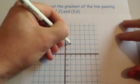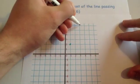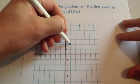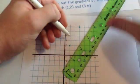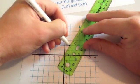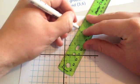So the coordinates were (1,2), so 1, 2, and (3,6). We've been asked to find the gradient of the line that passes through those, to work out the gradient of the line that passes through these two points.